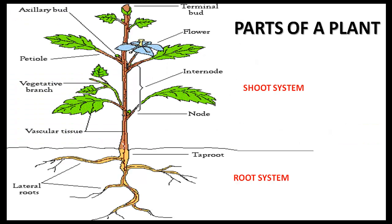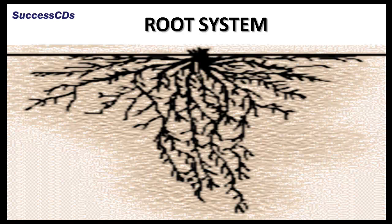Plants can be divided into two main parts: an underground part which remains under the soil, called the root system, and an above-ground part called the shoot system. The root system consists of the roots. The shoot system consists of stem, branches, leaves, buds, flowers, fruits and seeds. The root is the underground non-green part of the plant body which fixes the plant to the soil.